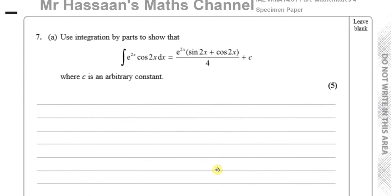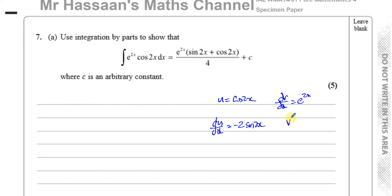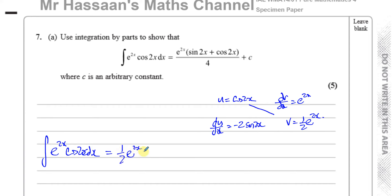With u = cos(2x) and dv/dx = e^(2x): du/dx = −2sin(2x), and v = (1/2)e^(2x). So the integral of e^(2x)cos(2x) dx = uv − ∫v(du/dx) = (1/2)e^(2x)cos(2x) minus the integral — the minus and minus give plus, the 2 and 1/2 cancel — giving plus the integral of e^(2x)sin(2x) dx.